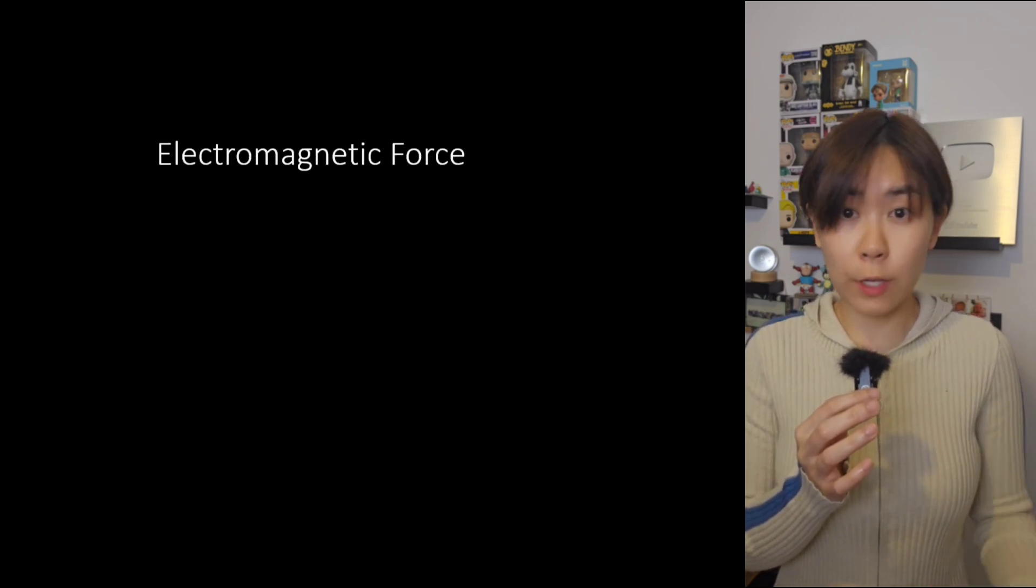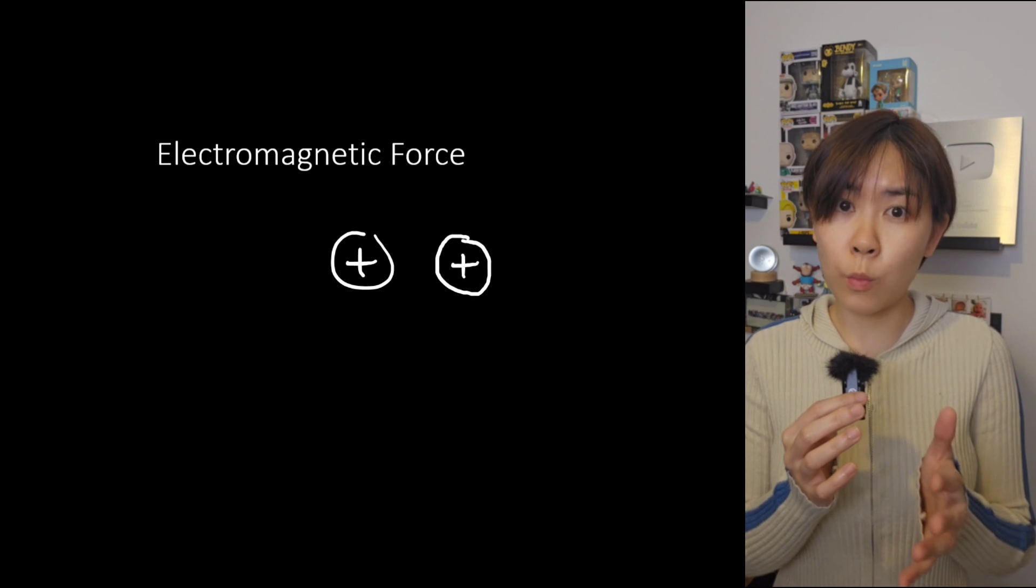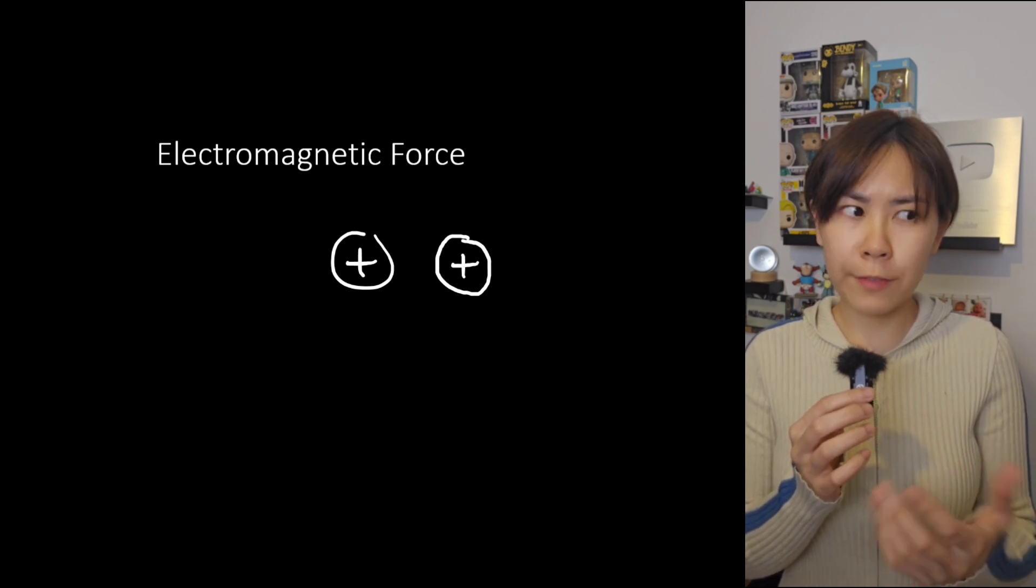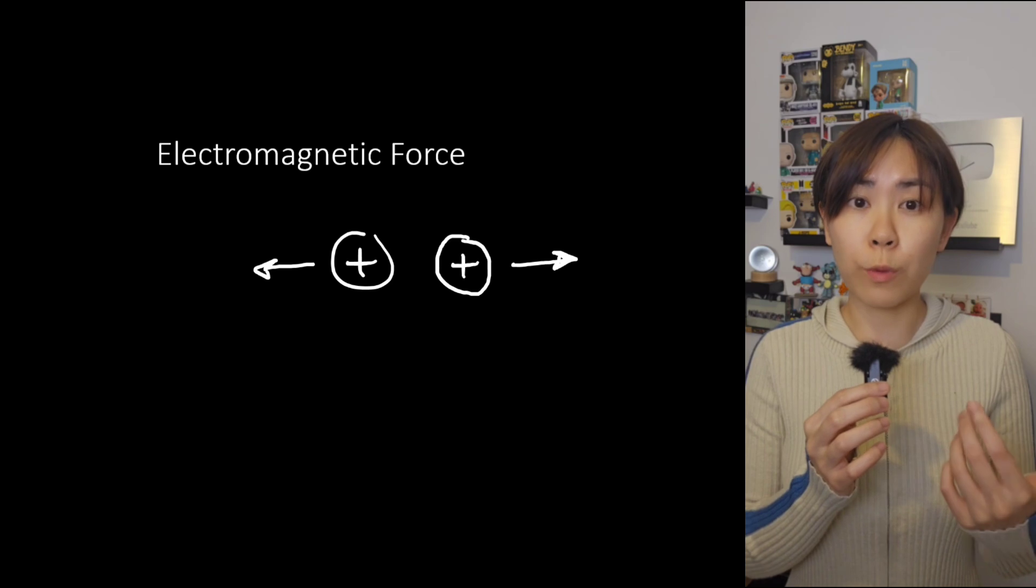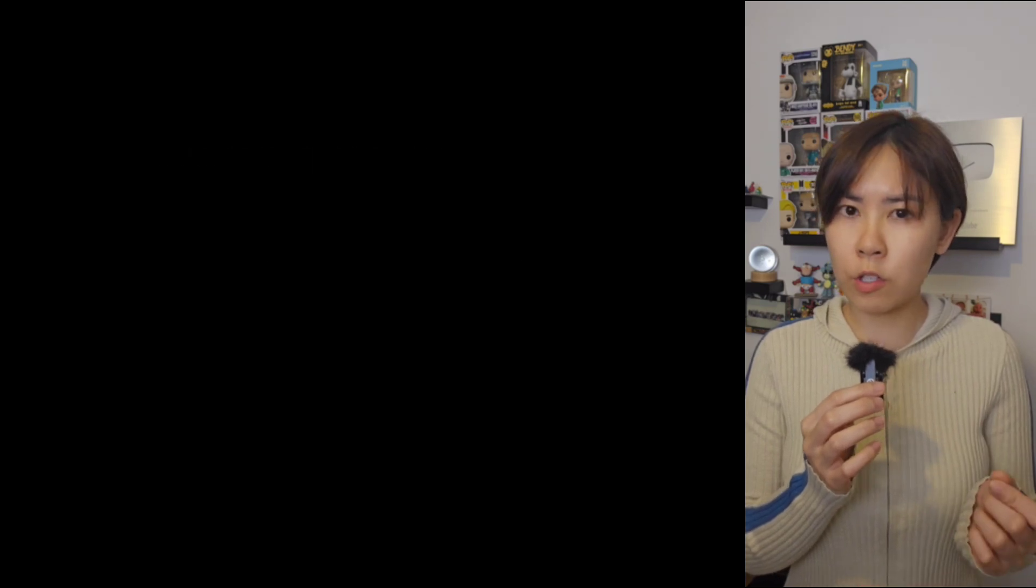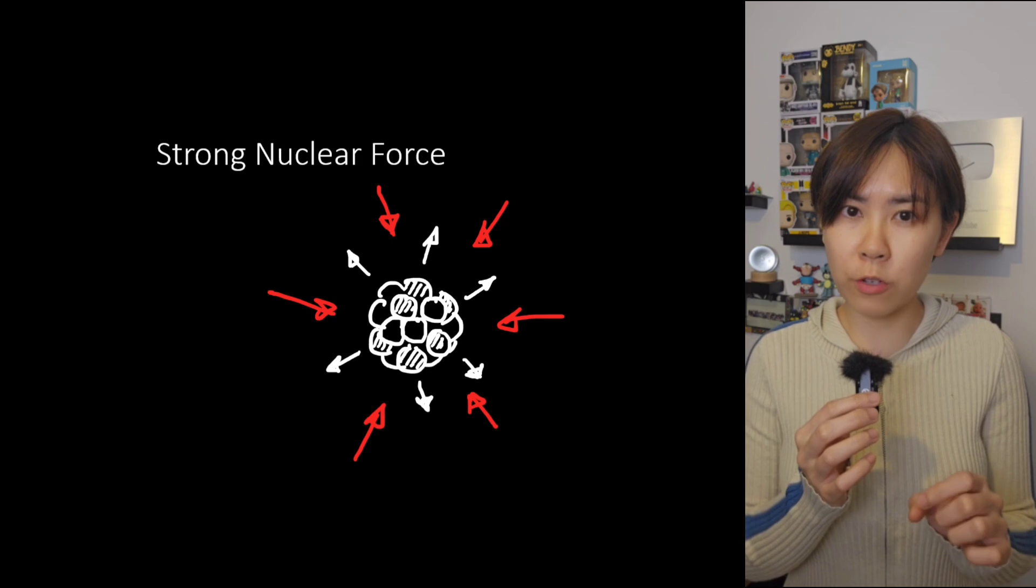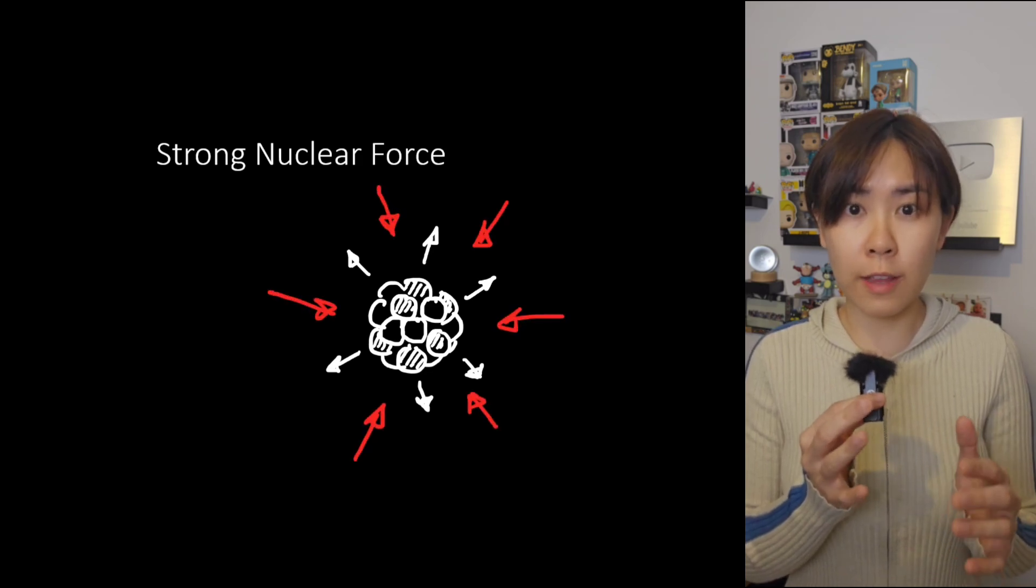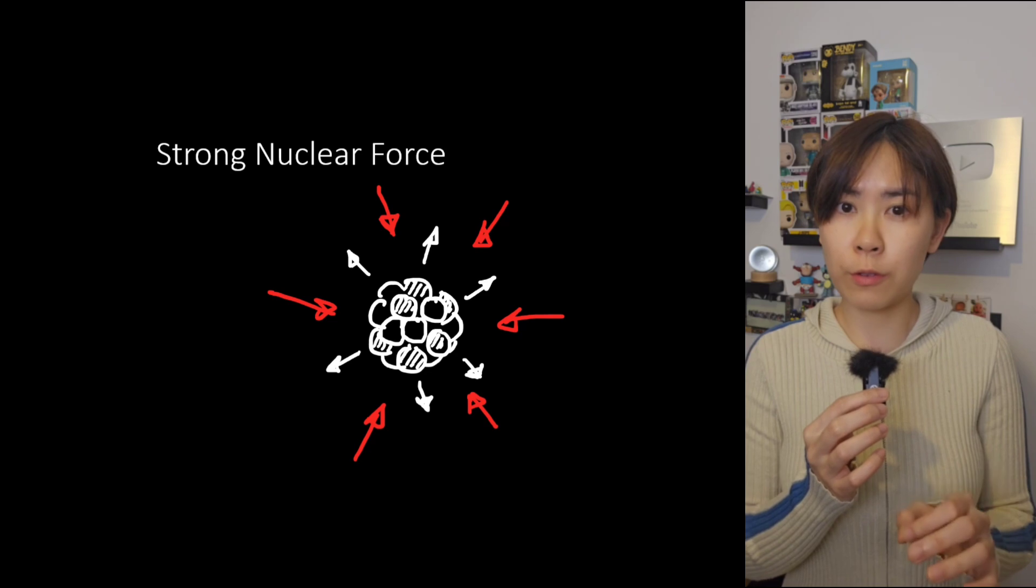We know that there is the electromagnetic force, which is a repulsive force between particles with the same charge. And this is why a proton next to another proton will repel each other. So to keep the nucleus from flying apart, there must be a force that pushes the protons and neutrons together. This force is known as the strong nuclear force.